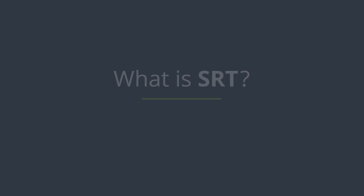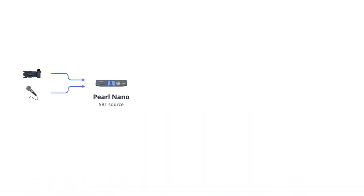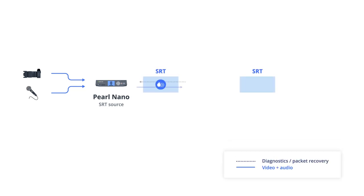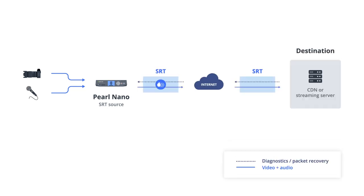SRT stands for Secure Reliable Transport. Without getting too technical, the reliable part is what really separates SRT from other streaming protocols. Built into SRT is a two-way back channel that carries key performance information during streaming. This allows the protocol to detect and address issues like packet loss, jitter, and other threats to quality.